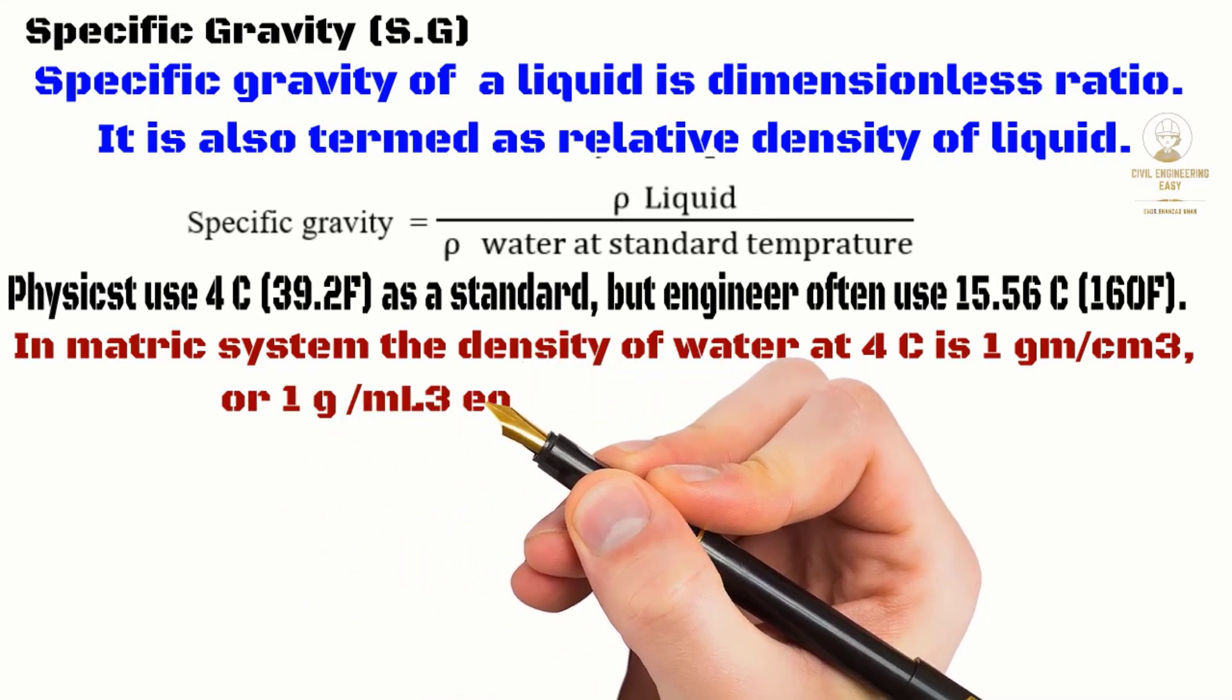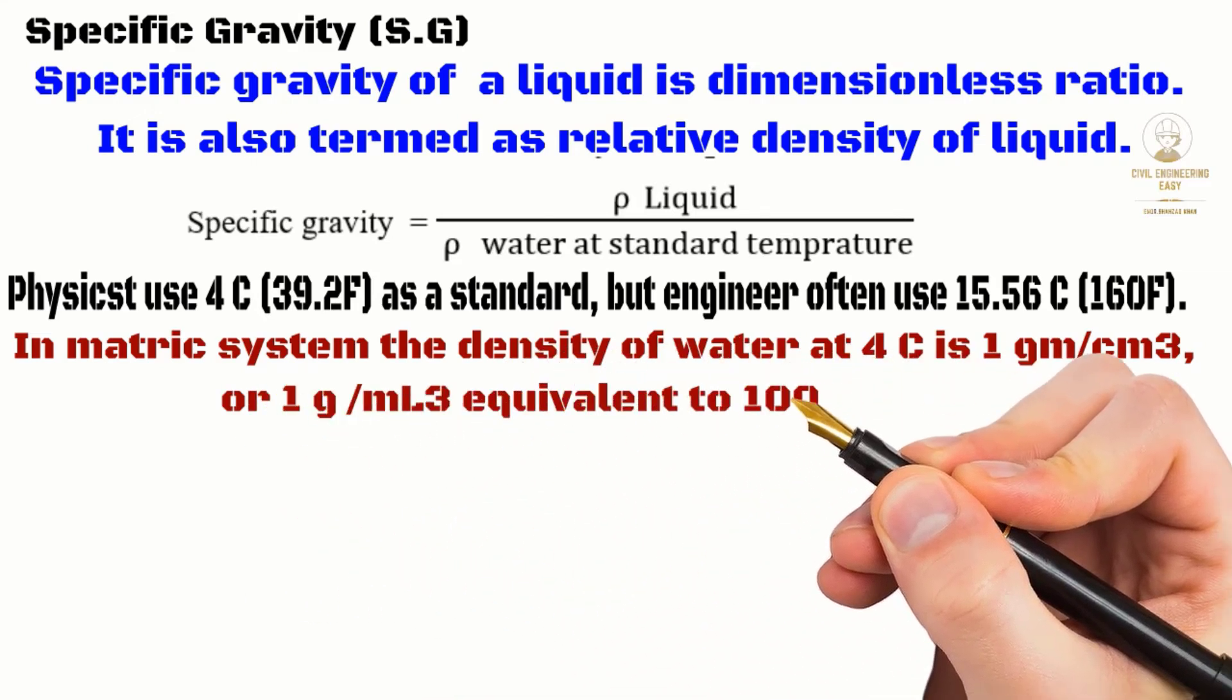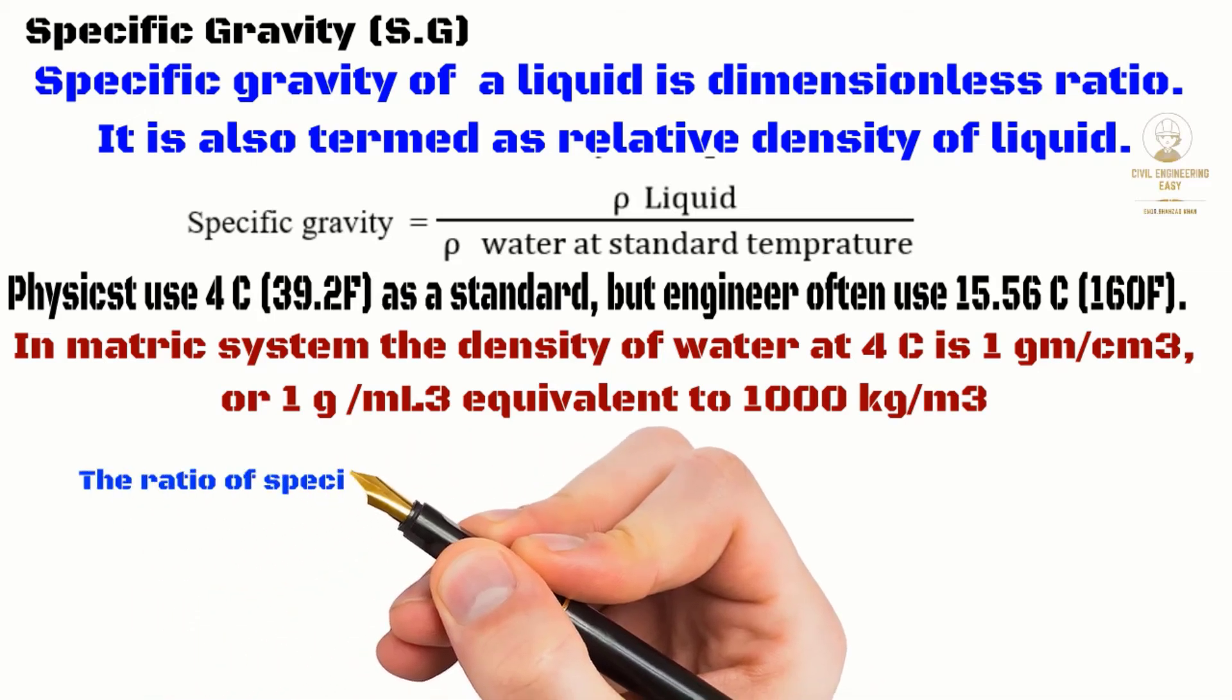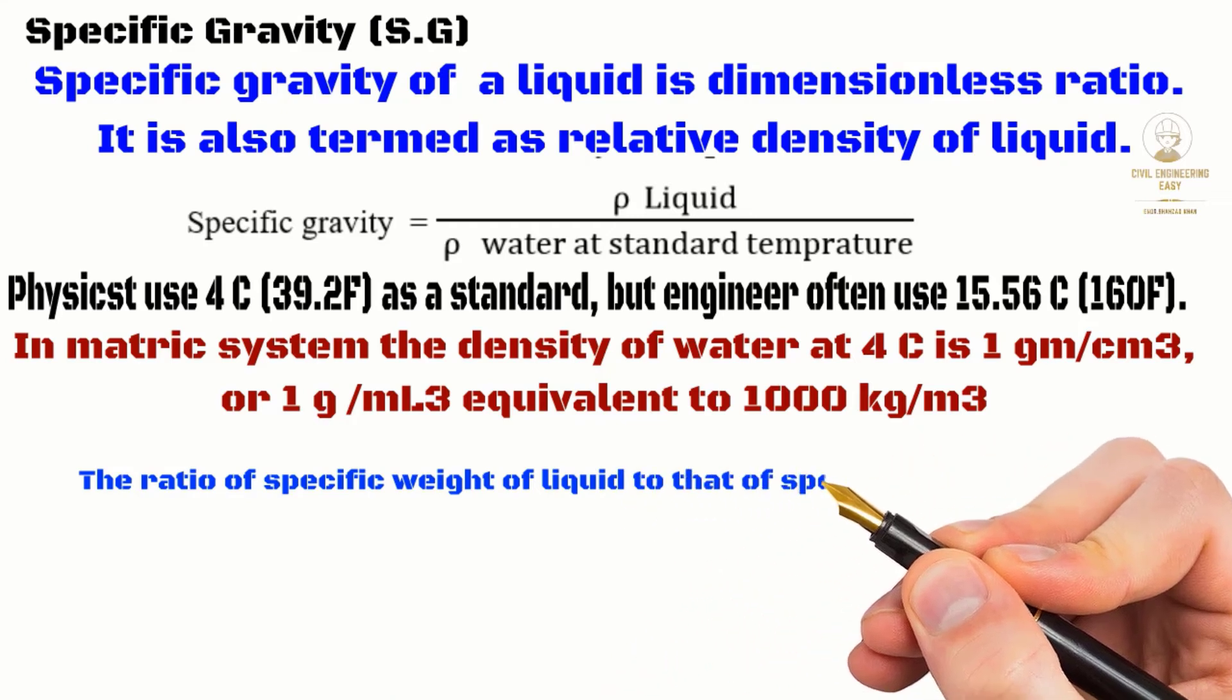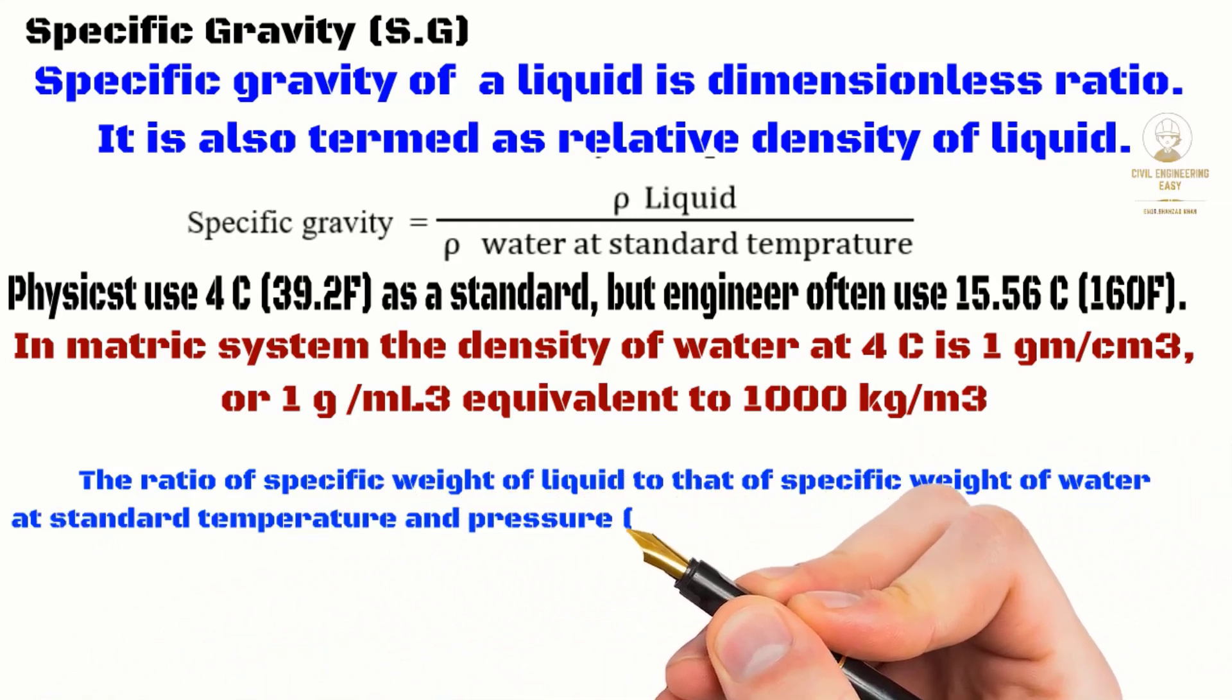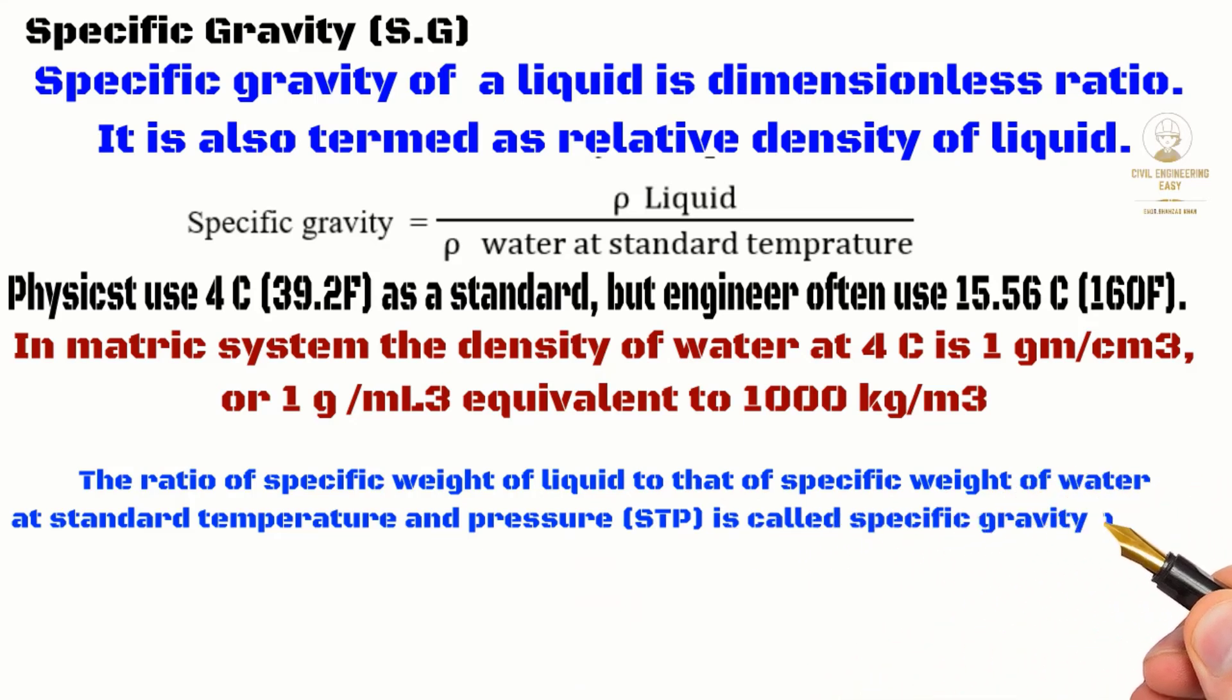Specific gravity may also be defined as the ratio of specific weight of liquid to that of the specific weight of water at standard temperature and pressure. Specific gravity equals specific weight of liquid divided by specific weight of water.